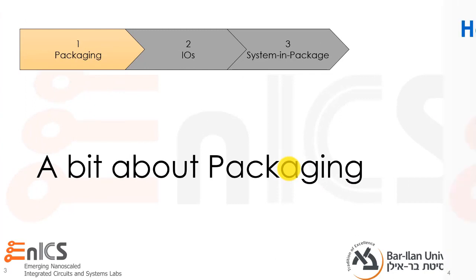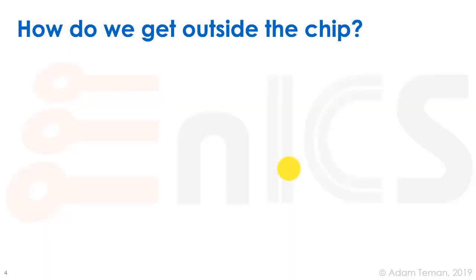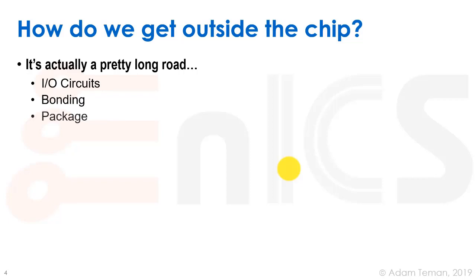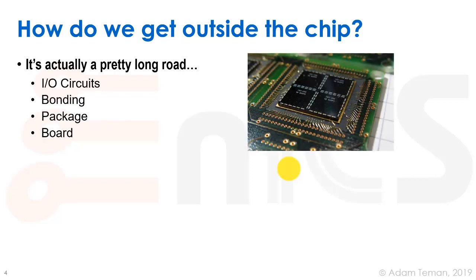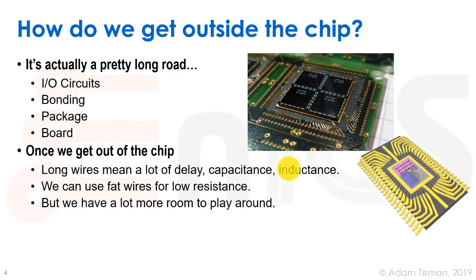Let's start with a bit about packaging — how do we actually get outside the chip? It's a pretty long road: we have IO circuits on the chip, they go into bonding wires that go into the package, and finally make it to the board. Once we get outside the chip we have long wires, which means a lot of delay, a lot of capacitance, and a lot of inductance — a different order of magnitude than what we're used to from inside the chip.